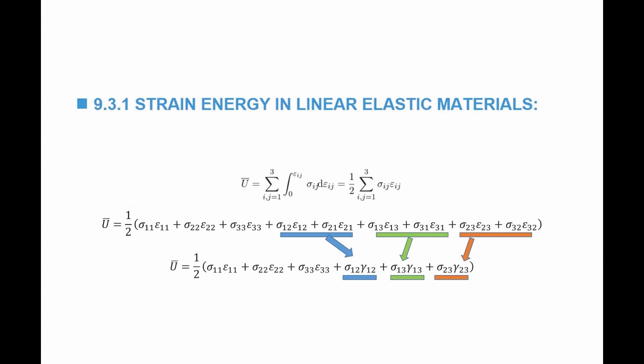Because of the symmetry of the stress and strain matrices, we can combine σ₁₂ε₁₂ plus σ₂₁ε₂₁ into one term: σ₁₂ multiplied by 2ε₁₂, where 2ε₁₂ is the engineering shear strain γ₁₂. Similarly for σ₁₃γ₁₃ and σ₂₃γ₂₃.